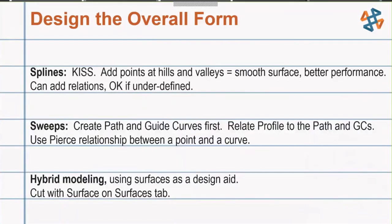Some highlights if you're taking notes: for splines, keep it simple — add points at the hills and valleys for a smoother surface and better performance. You can add relations to your spline handles and spline points, and it's okay to leave splines under-defined. For sweeps, create your path and guide curves first so you can relate the profile back to them. Use the pierce relationship between a point and a curve. We used hybrid modeling techniques — using surfaces as a design aid — and the Cut with Surface command on the Surfaces tab, which also works with planes.